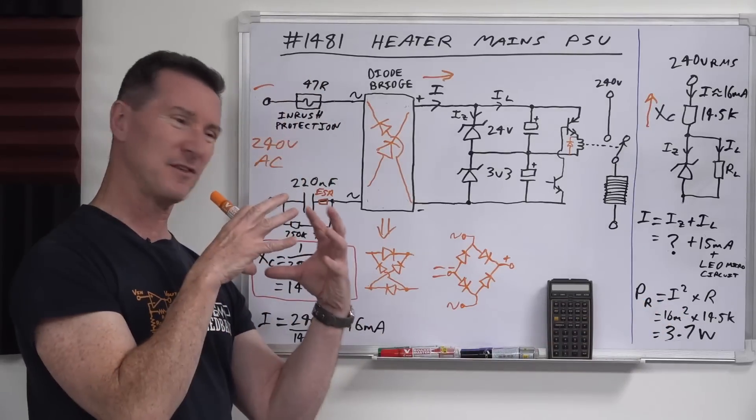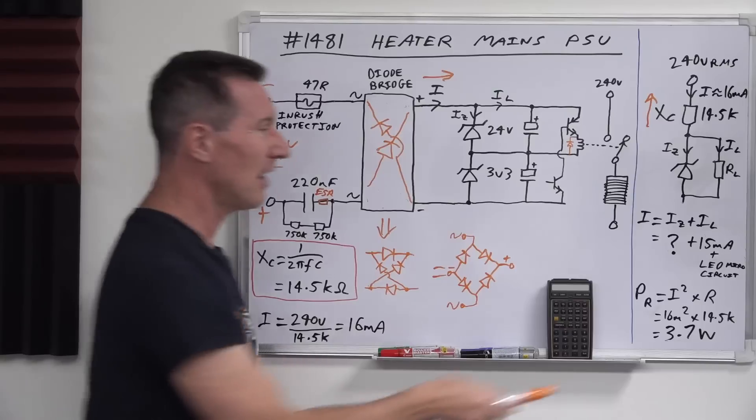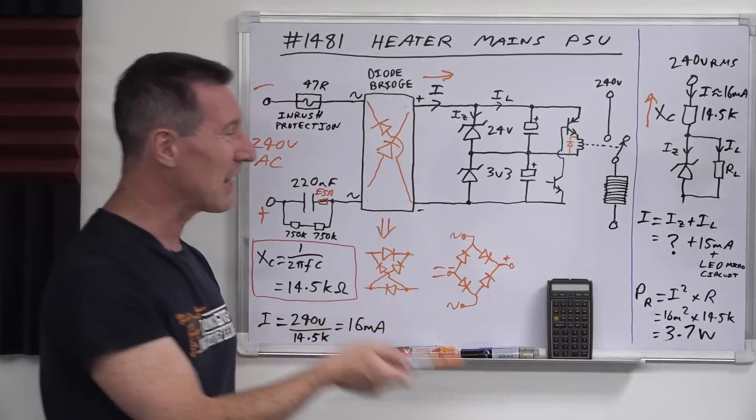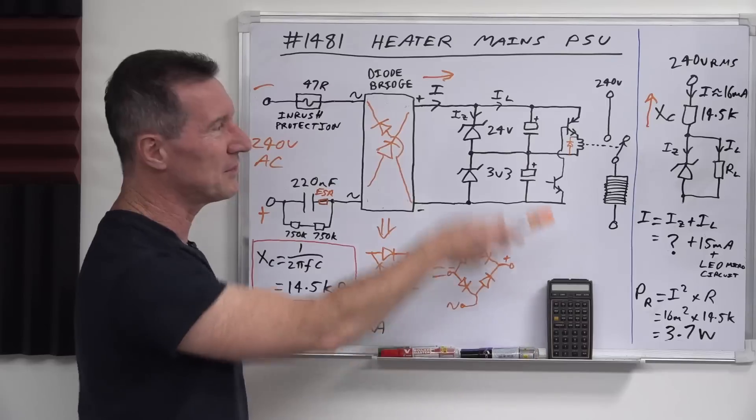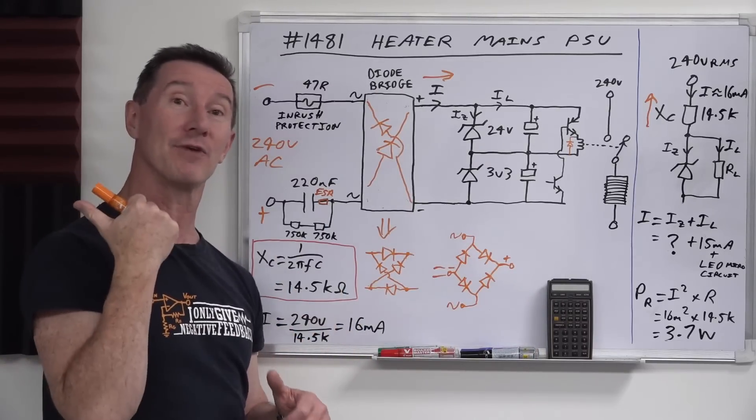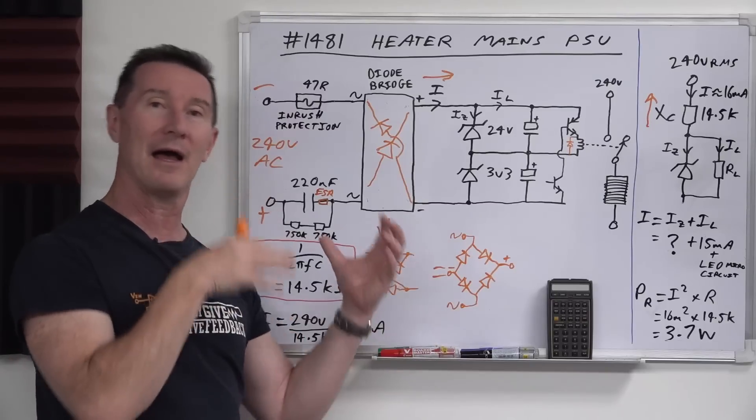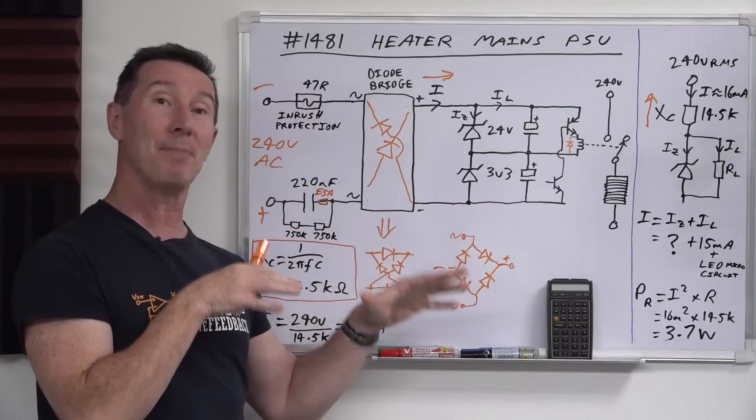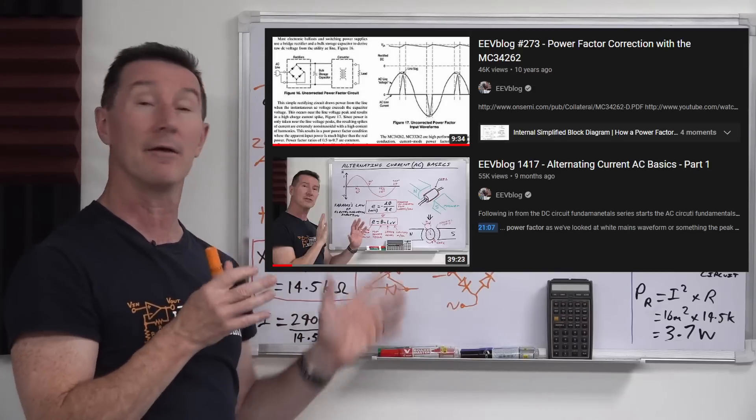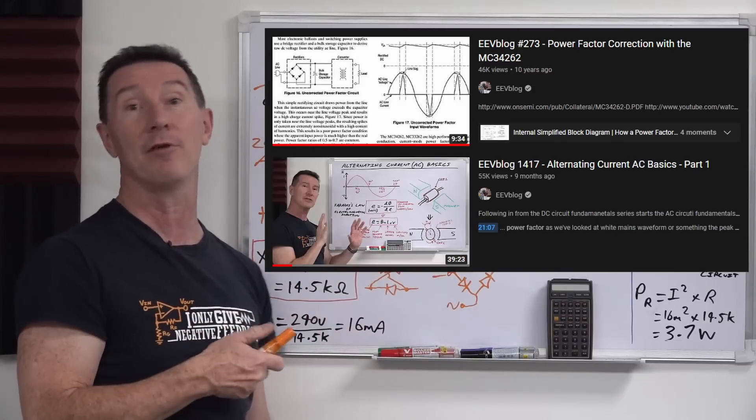So, that's why they whack a capacitor in there. So, you know, especially if it's a little compact device or something, you know, you don't want to be wasting, we're only talking, like, 16 milliamps here. It's not much current. You don't want to be wasting 3.7 watts to deliver your 15 milliamps. So, but it kind of, like, puts the problem back onto the grid, but the grid kind of, you know, sort of, they try and balance it out with power factor correction and all the rest of it. And we won't go into that. I've probably done a video on that. If I have, I'll link it in.